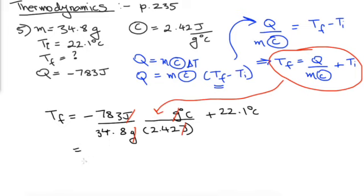Now I'm just going to do this calculation. And when I do it, I end up with negative 9.30— oh, I missed the unit. We should write the unit. Degrees Celsius plus 22.1 degrees Celsius. And this is equal to 12.8 degrees Celsius.